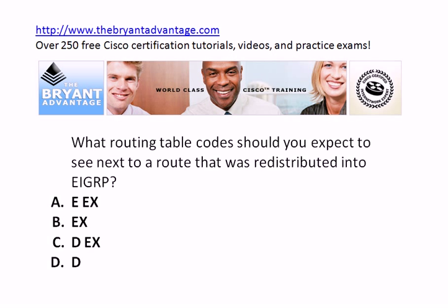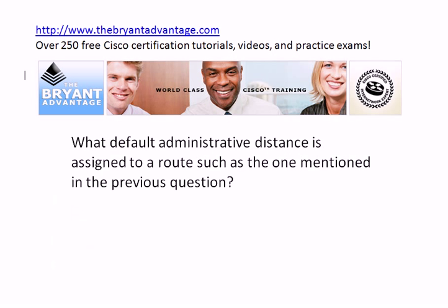A couple of choices here. If you redistribute a route into EIGRP, what routing table codes should you expect to see next to that redistributed route? Next question: what default AD is assigned to a route like that? What is the default AD of a route that is learned by EIGRP via redistribution?